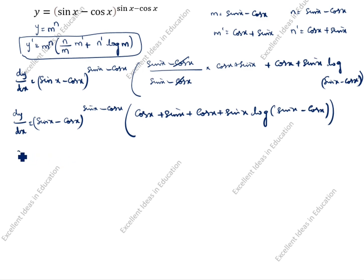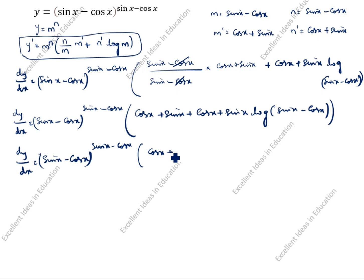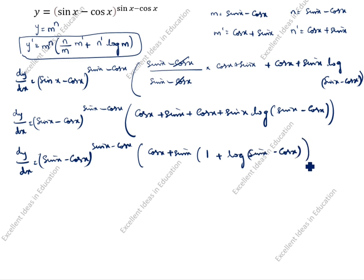So we get cos x plus sin x plus sin x plus cos x, plus sin x times log of (sin x minus cos x). So dy by dx is equal to (sin x minus cos x) to the power (sin x minus cos x). We can take cos x plus sin x common, and it comes: (cos x plus sin x) times (1 plus log of (sin x minus cos x)). This is the answer.